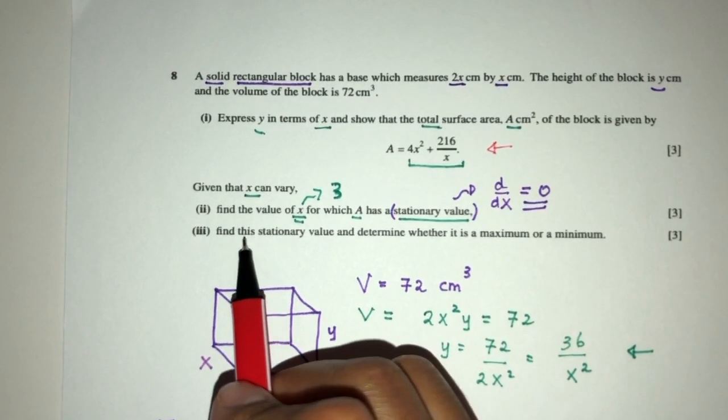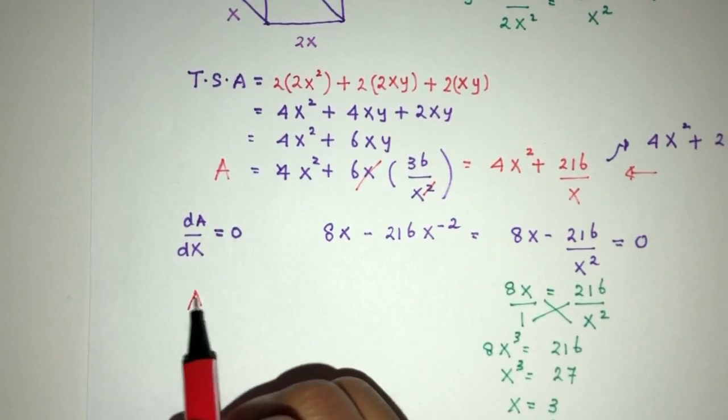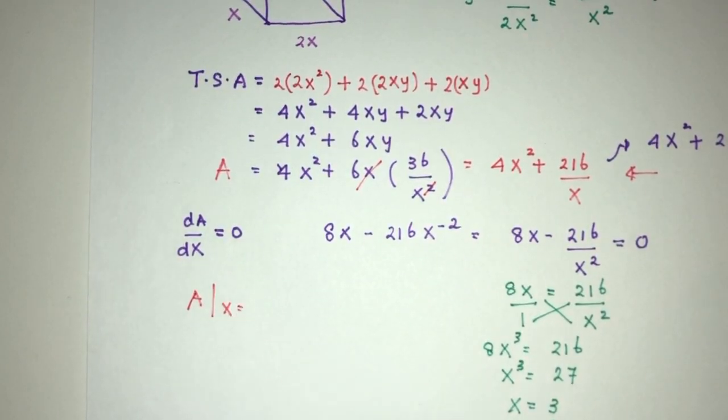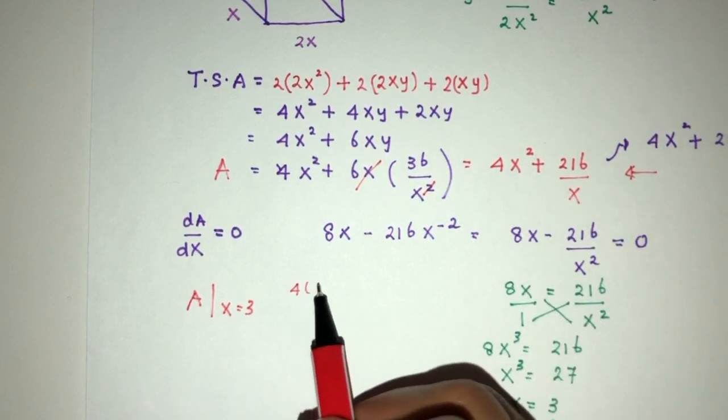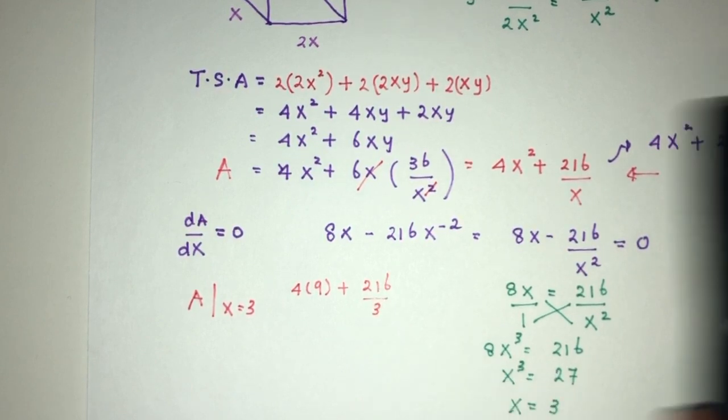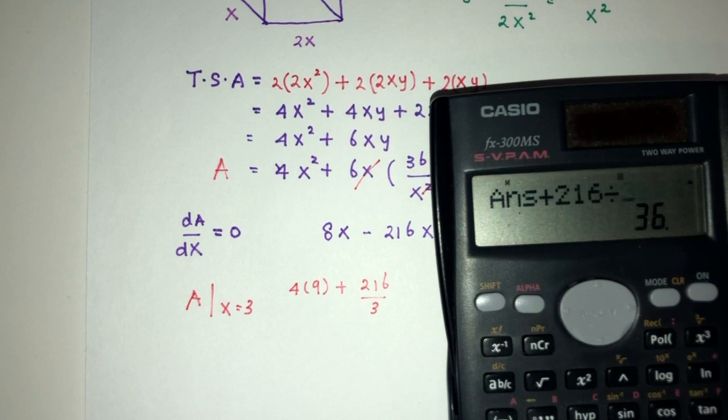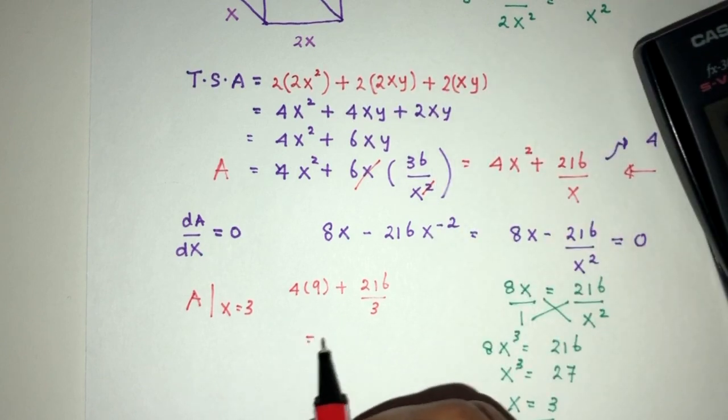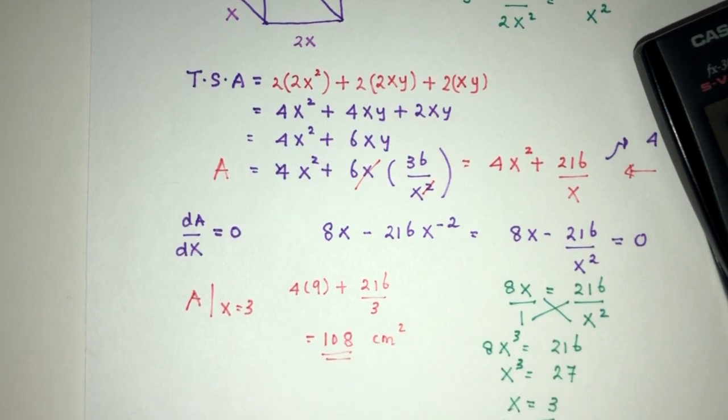Now find the value, find this stationary value and determine the nature of this value. So pretty easy, the value is A, it is when x is equal to 3. We place it back in the equation, you will have 4 times 9 plus 216 divided by 3. So 4 times 9 plus 216 divided by 3, that will be 108 centimeters squared for this stationary value.